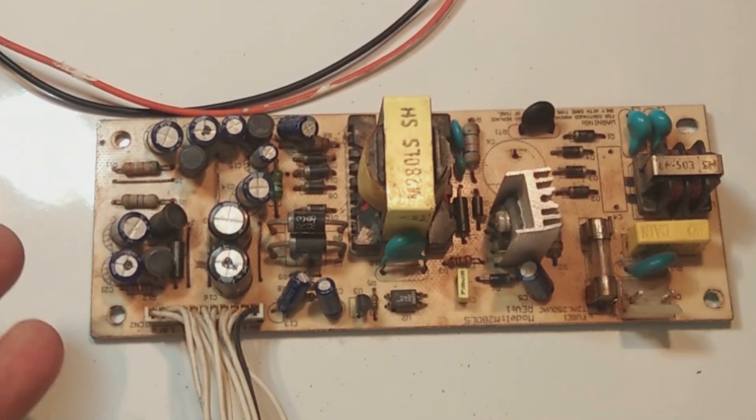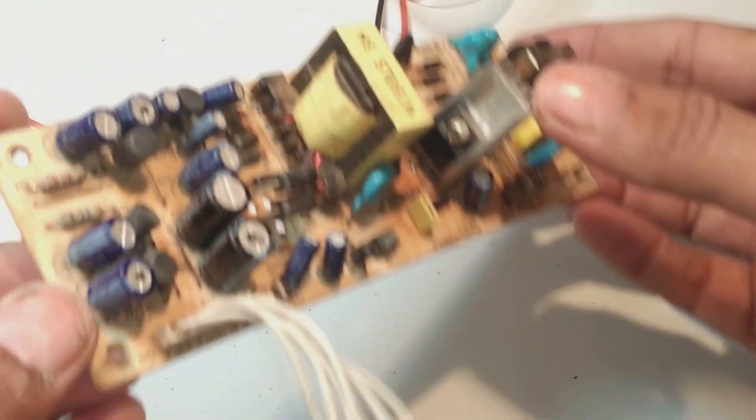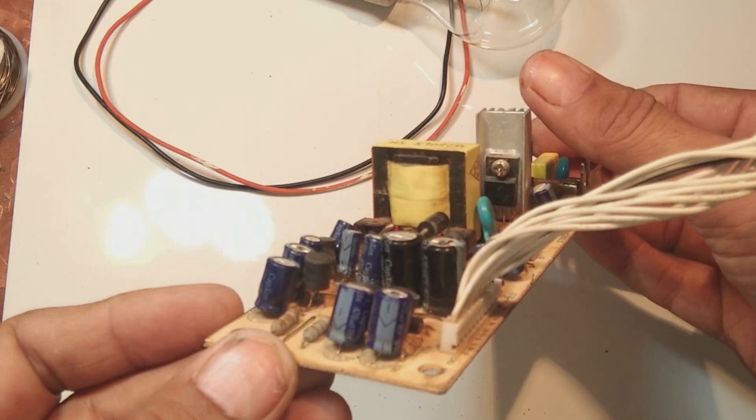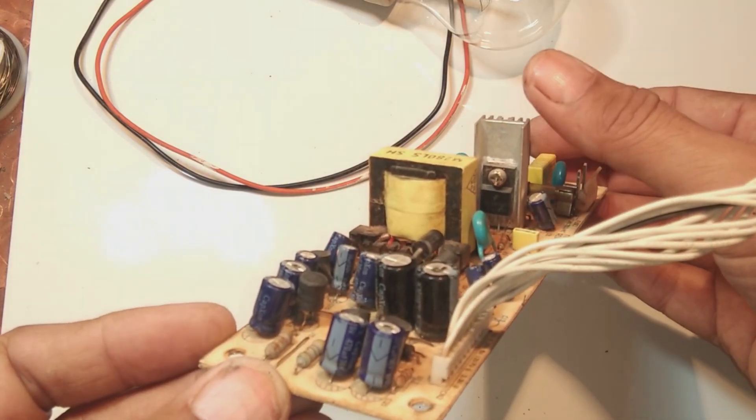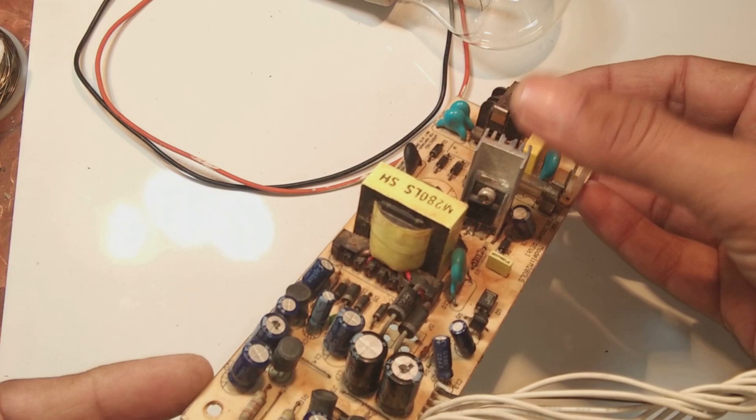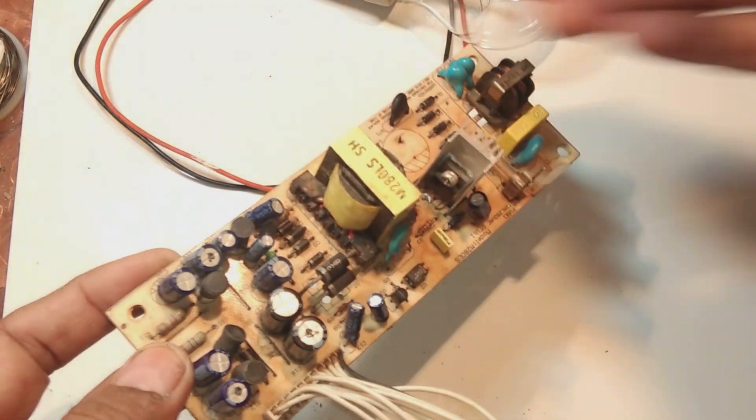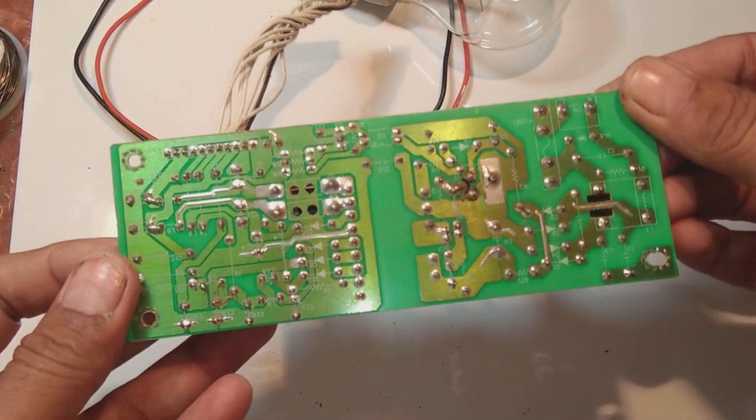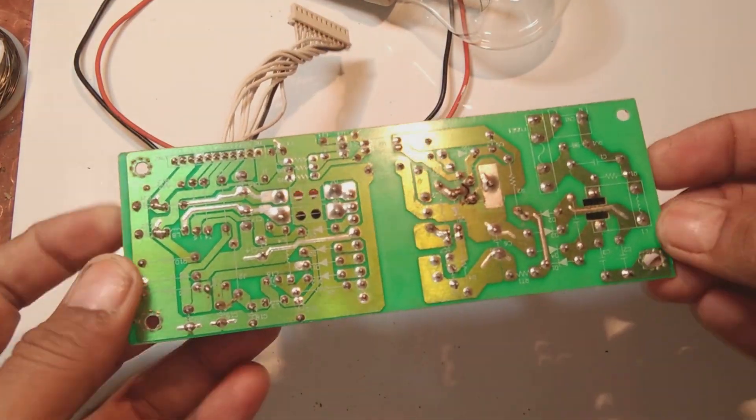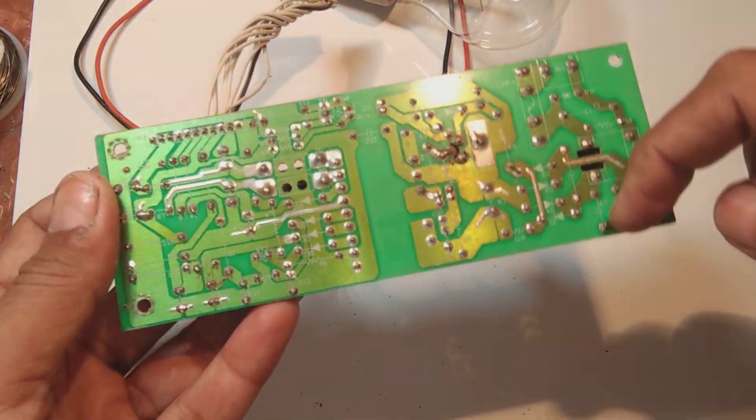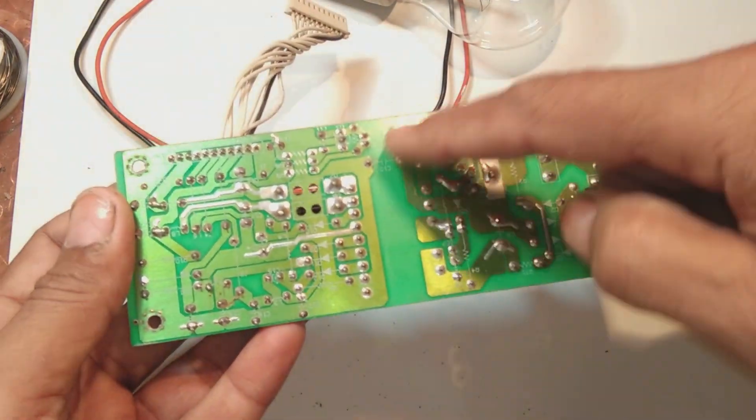This power supply is based on the Fairchild switch - this is a very famous switch, 5L0380 or 5L0280. These power supplies are very common and very simple. This is the primary side, the hot side taking the line voltage.